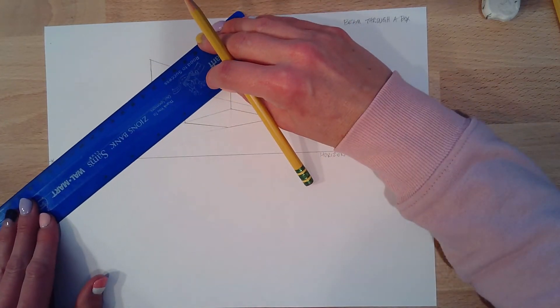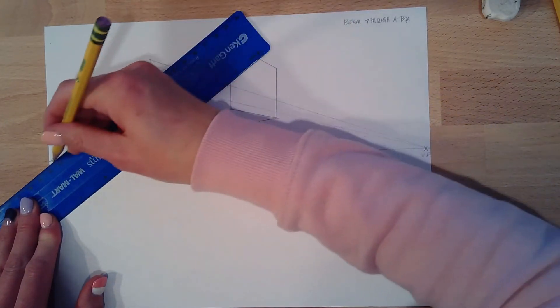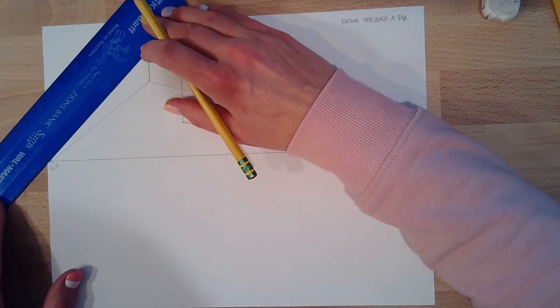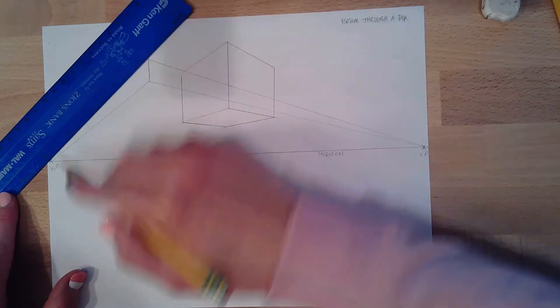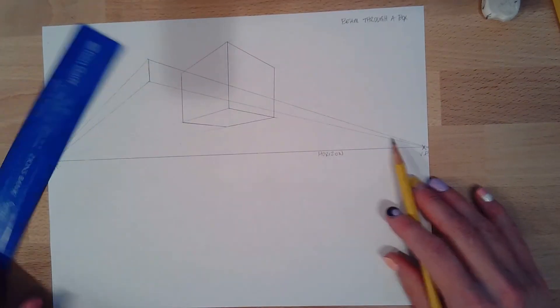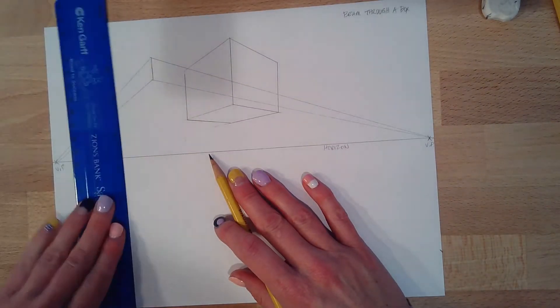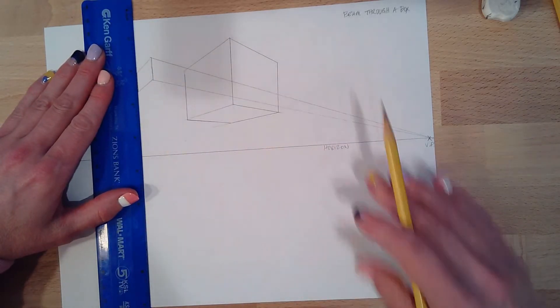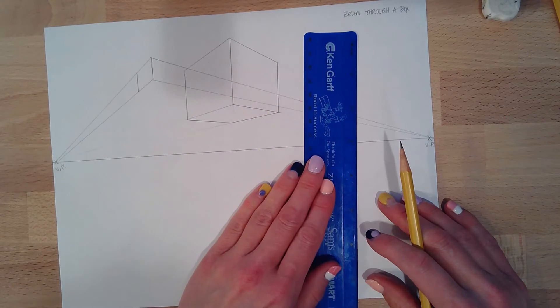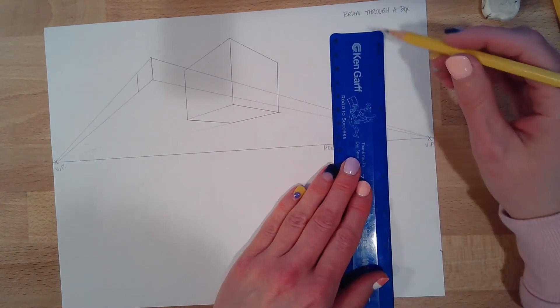This is going to be my short side of the beam. Again, using a sharpened pencil, a good ruler. I have my vanishing point with my dots, so I know exactly where I'm going. I'm going to decide how thick I want this beam, how long I want the beam. So that's how thick. And I'm going to have my beam stop about right here.